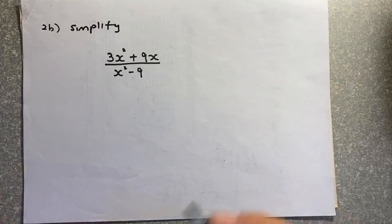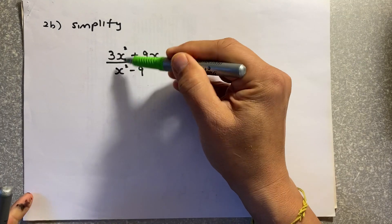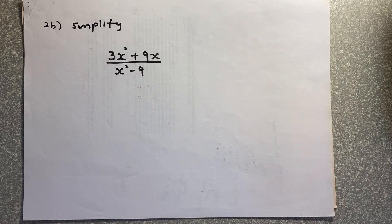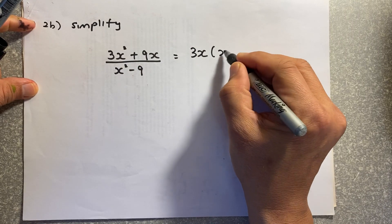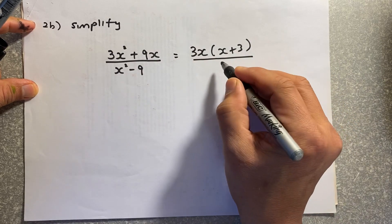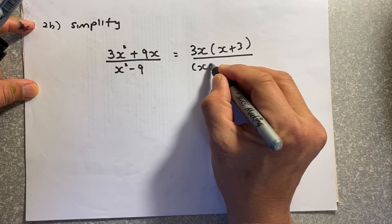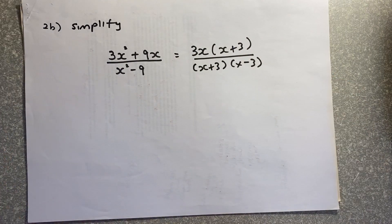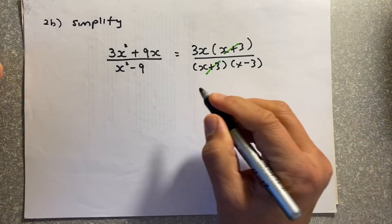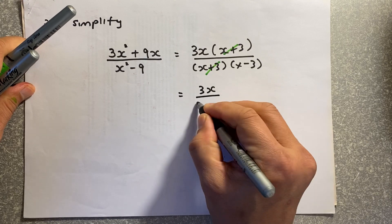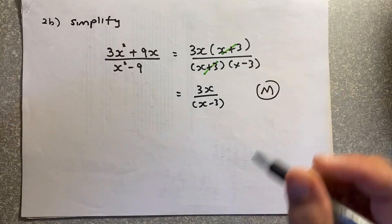Next question: simplify an algebraic fraction. You must factorize the top and the bottom — you cannot just cancel x² with x². The common factor on top is 3x, leaving (3x)(x + 3). The bottom, x² − 9, is a difference of two squares: (x + 3)(x − 3). Cancel the common factor (x + 3) and the answer is 3x / (x − 3). That gives a merit.